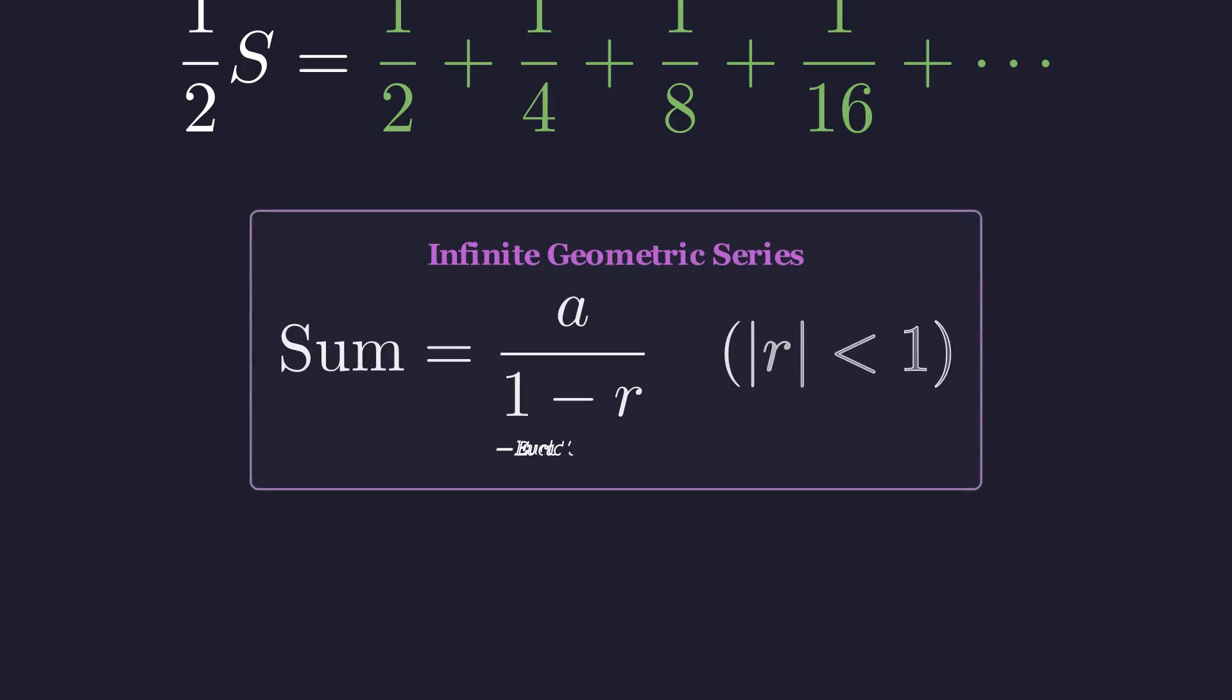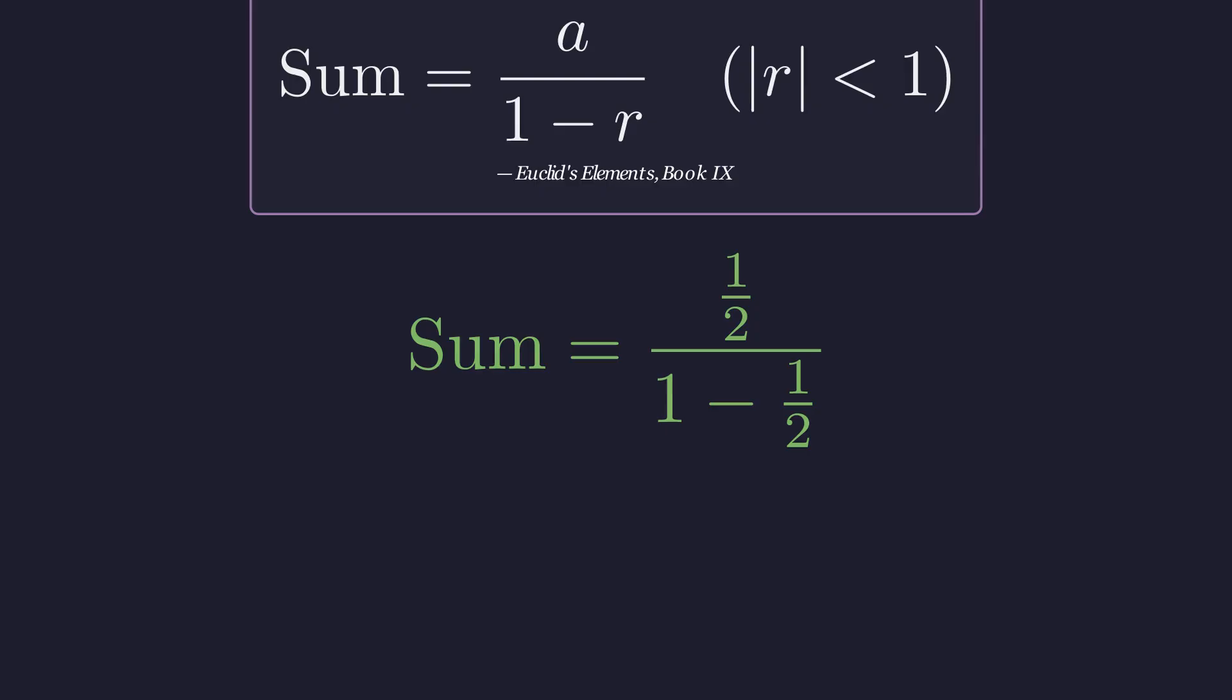For a geometric series, the sum is a divided by one minus r, where a is the first term and r is the common ratio. Here, the first term is one-half and the ratio is also one-half.